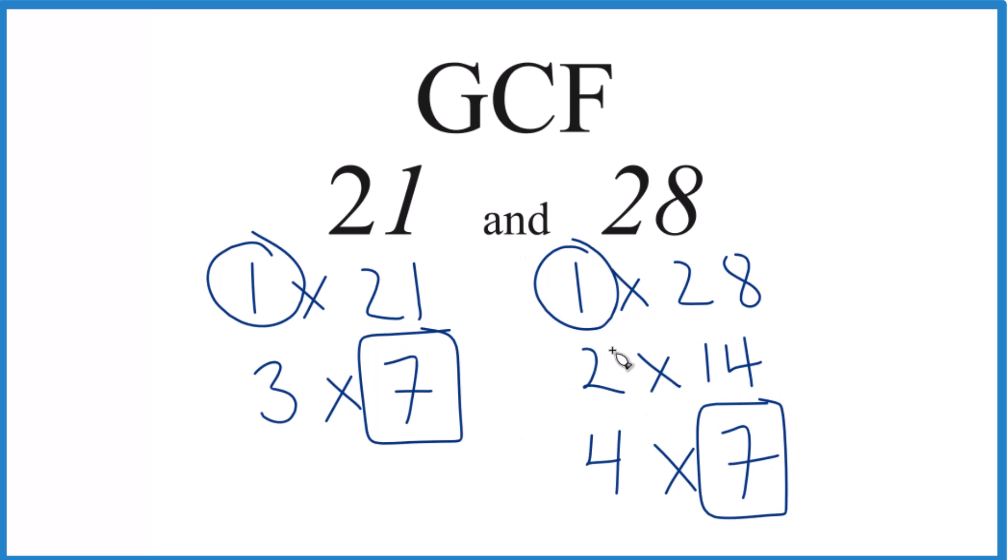And it looks like that's the greatest common factor. So in answer to our question, the GCF for 21 and 28 is going to be 7.